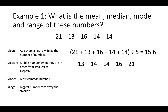For the median, we need to put them in order from smallest to biggest and find the middle number. The way I do this if I've got a big list is I cross out the first, cross out the last, cross out the first, cross out the last — and I'm left with the middle number, which is 14 here.